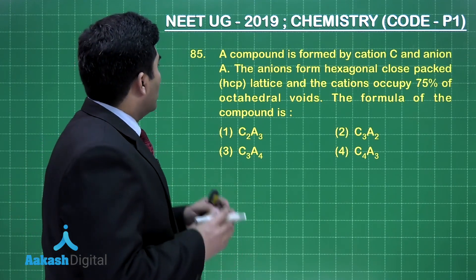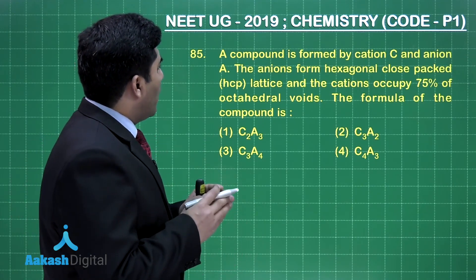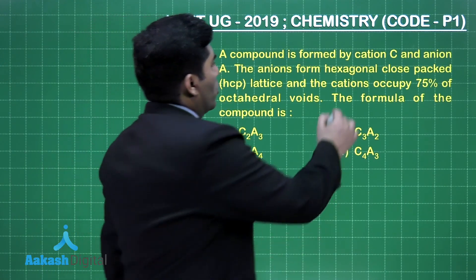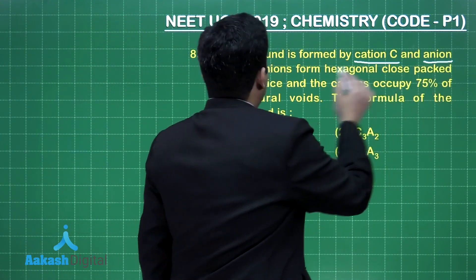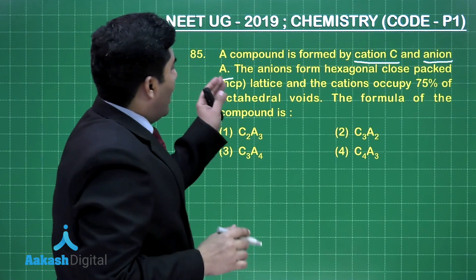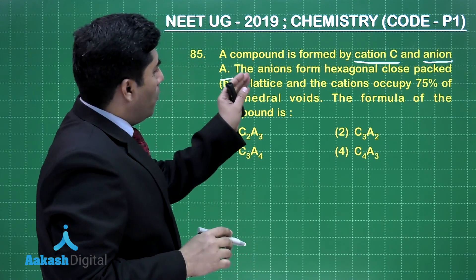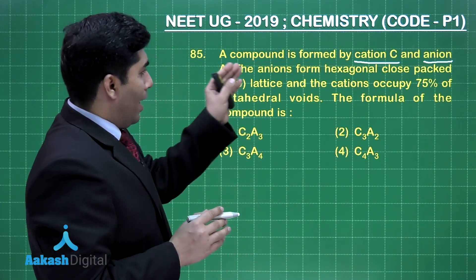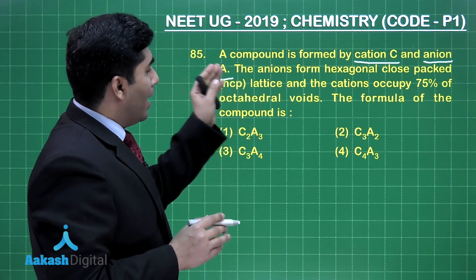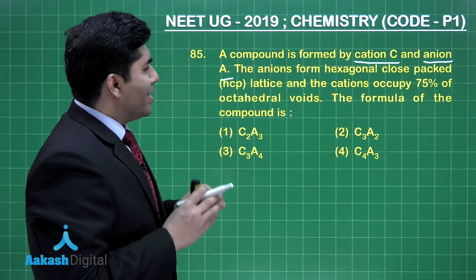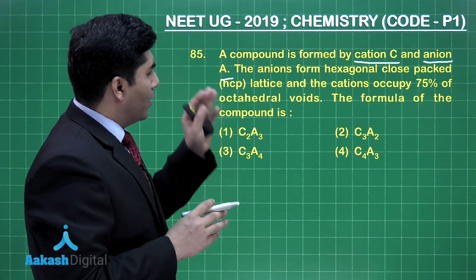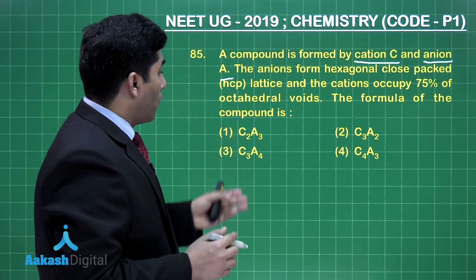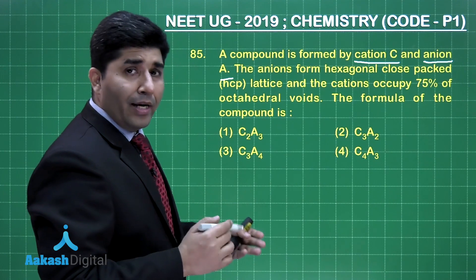In this question, a compound is formed by cation C and anion A. C is the cation and A is the anion. The anions form hexagonal closed packed structure, that is HCP, and cations occupy 75% of the octahedral voids. We have to find the formula of the compound from the four given options.